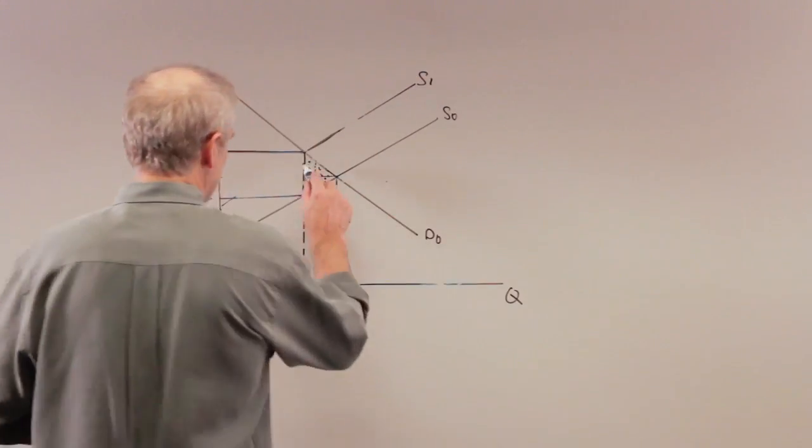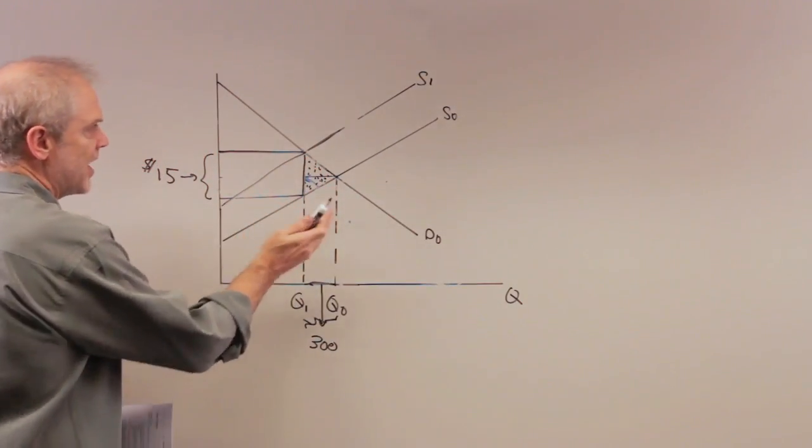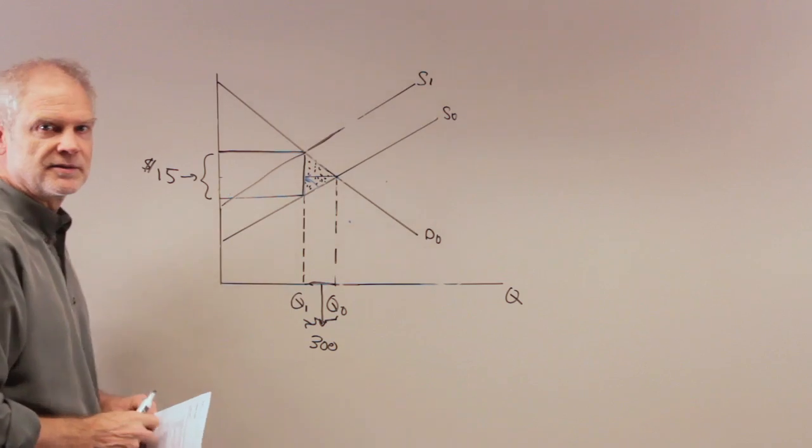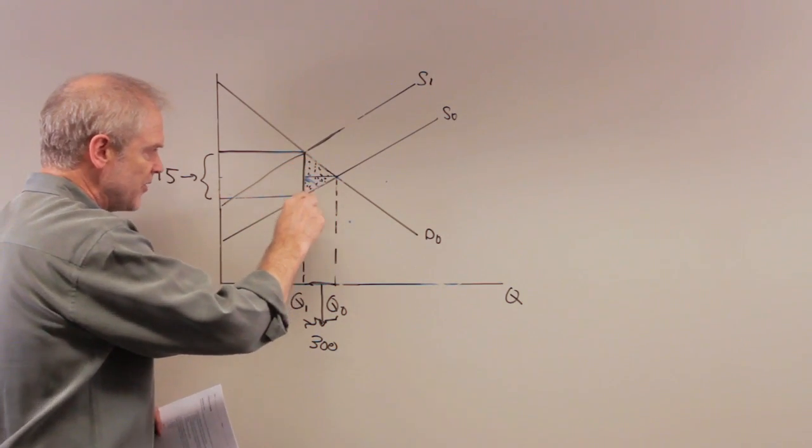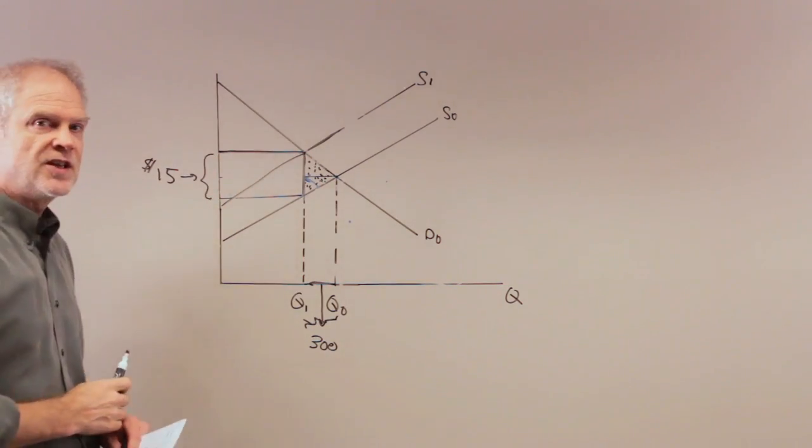In the typical situation, we know when there's a tax on the suppliers, the supply curve shifts back. Right? We also know the tax is $15, so we know this distance right here, as I've drawn it right here, is $15.